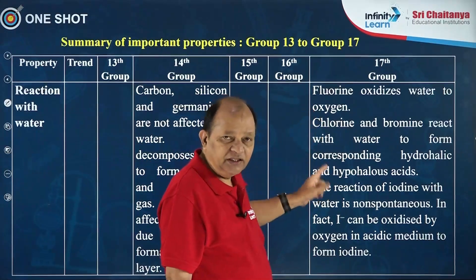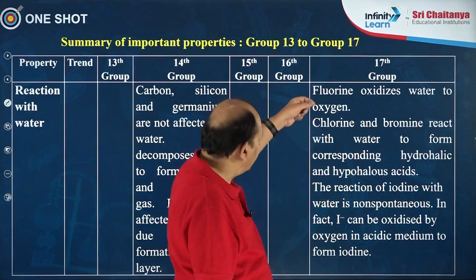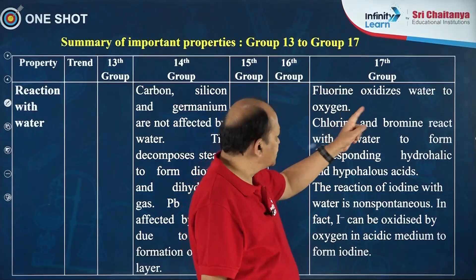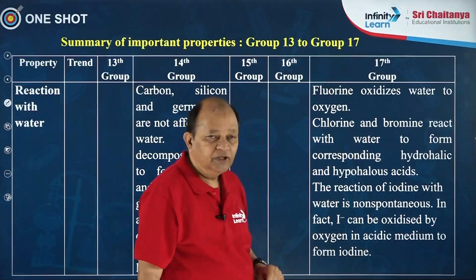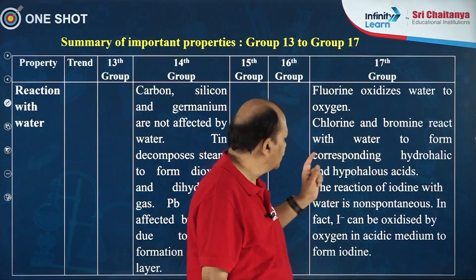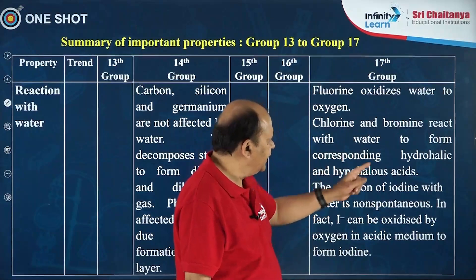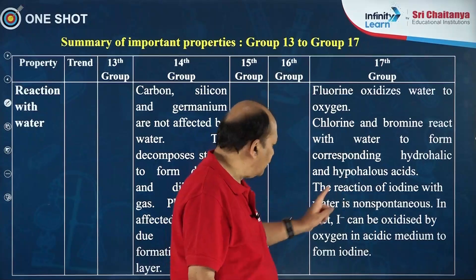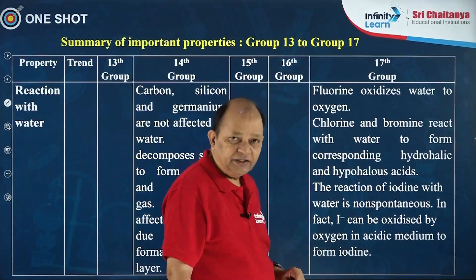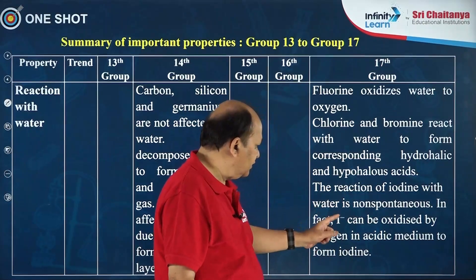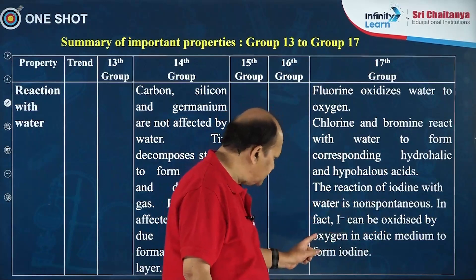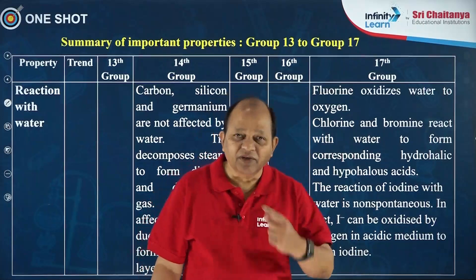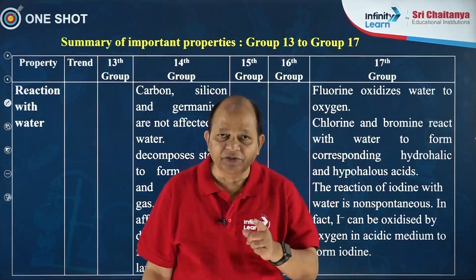The reactivity of halogens with water is interesting. The reactivity decreases from fluorine to iodine. Fluorine oxidizes water to oxygen. Chlorine and bromine react with water to form corresponding hydrohalic and hypohalic acids. The reaction of iodine with water is non-spontaneous; in fact, iodide ion can be oxidized by oxygen in acidic medium to form iodine — it is actually a reverse reaction of fluorine with water.